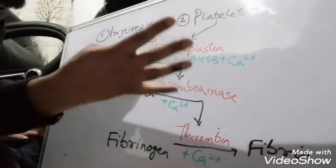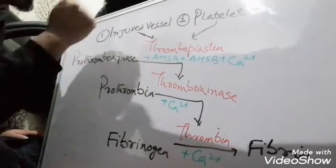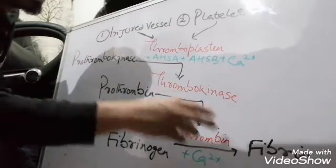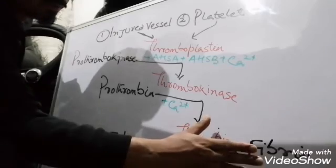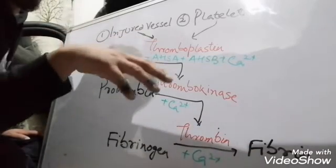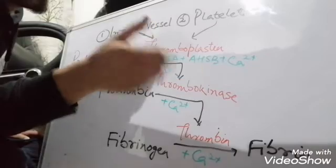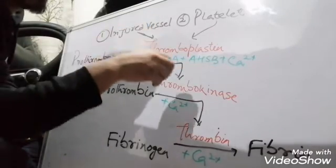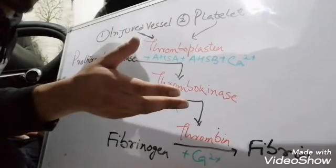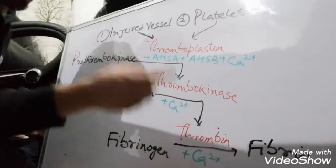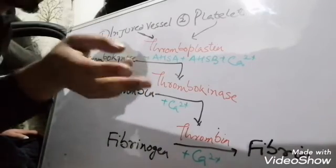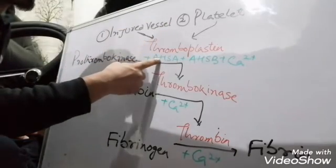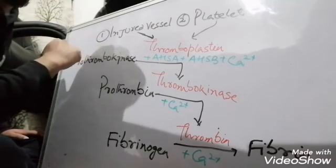Calcium is again a clotting factor because it assists in the formation of fibrin, and it is considered clotting factor 4. AHSA is again a clotting factor because it is involved in the process of fibrin formation, and AHSA is known as clotting factor 8. AHSB is also a clotting factor and is called clotting factor 9.